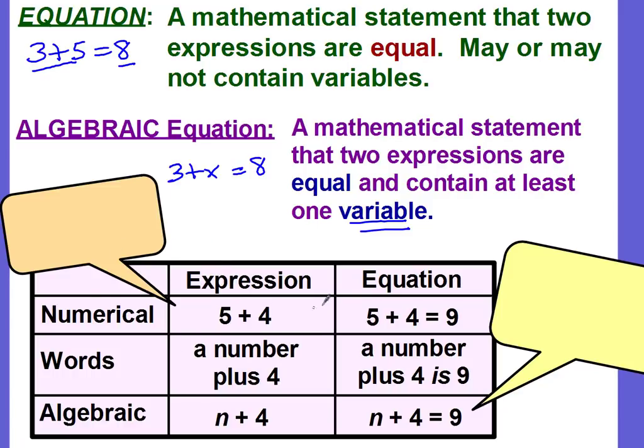Let's take a look at this table. This table is going to show the differences between expressions and equations. One thing to remember about expressions is that it represents a single value. So 5 plus 4, this is a numerical expression. There are no variables in it. It's not an equation, because an equation will have the equal sign.